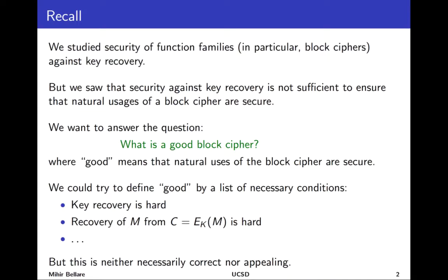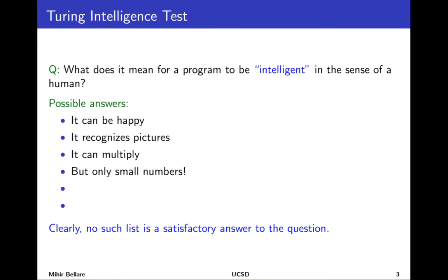A natural approach is to list desirable properties. One is certainly that it's hard to recover the key from input-output examples. Another could be it's hard to recover the message from the ciphertext, which may be possible without knowing the key. All of these are good properties, but they're not sufficient, because many other things are also desirable. No such list is going to give us a full and final answer.